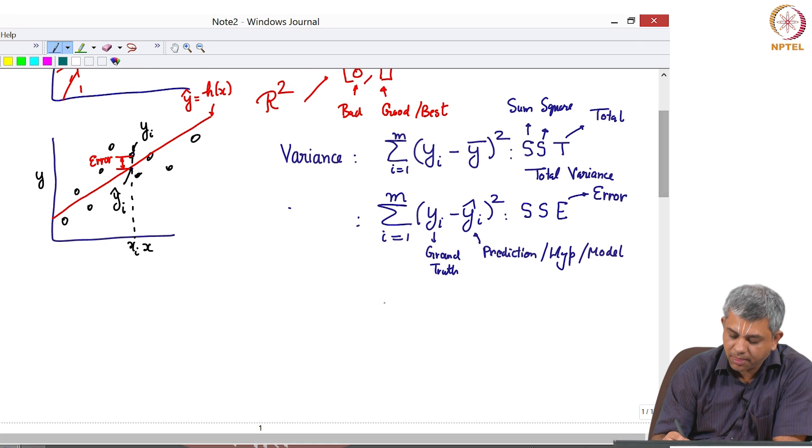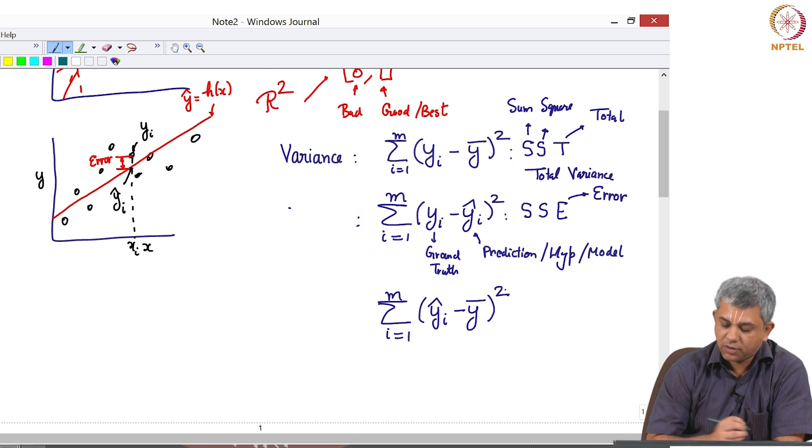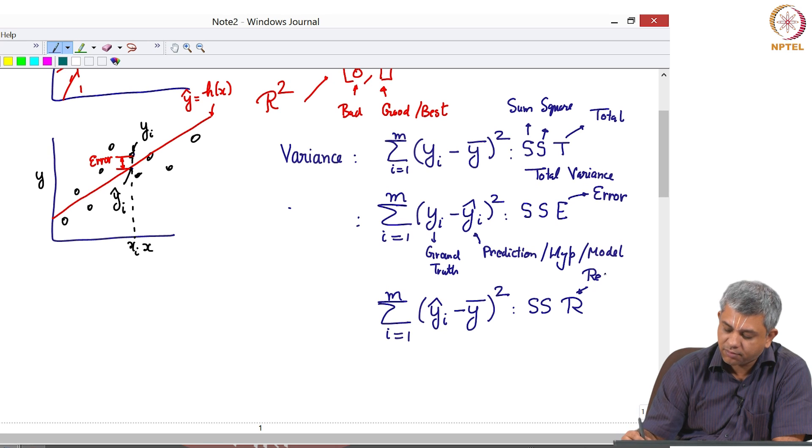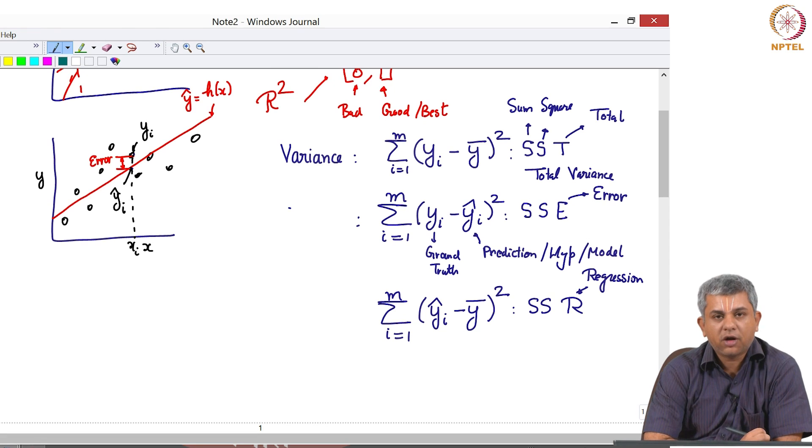The meaning of this term is fairly clear. This is simply the difference between yi and y hat i, where yi is the ground truth and y hat i is our prediction or our hypothesis or our model. There is a third term or a third measure of error: this is Y hat i minus Y bar square.